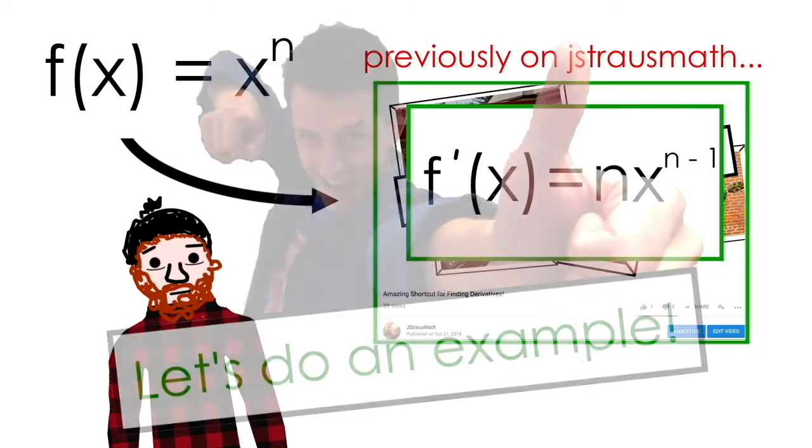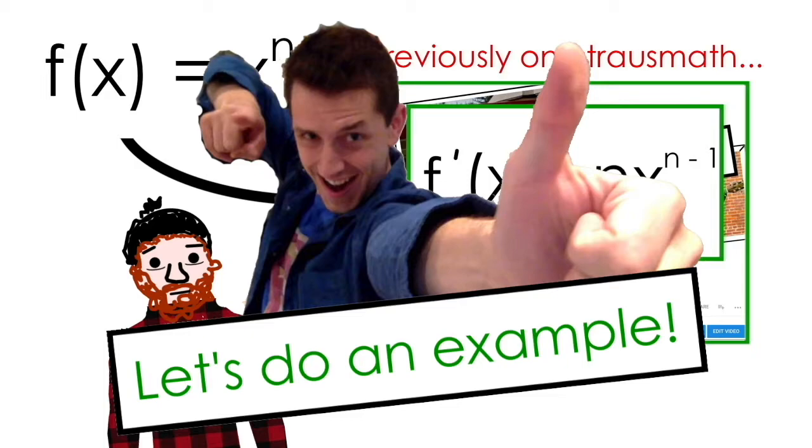In this video, I'll walk you through a few examples that at first glance don't appear to be in the form x^n, but after some algebraic manipulation, can be rewritten so that the power rule can be applied.